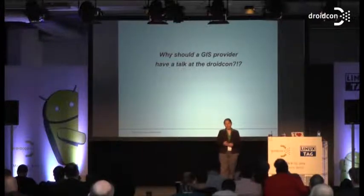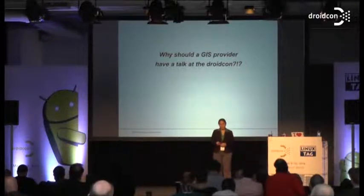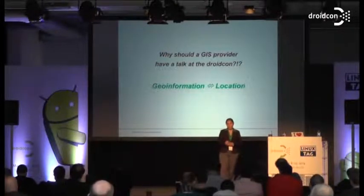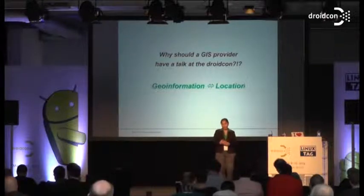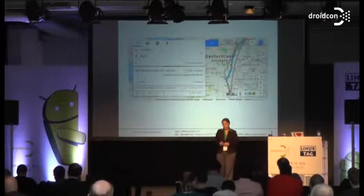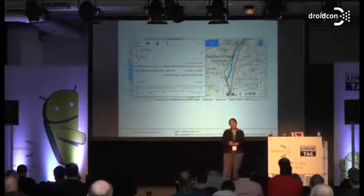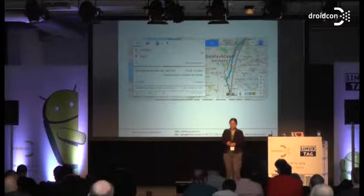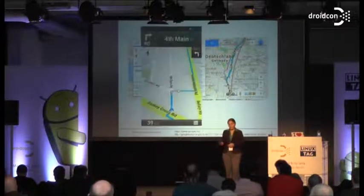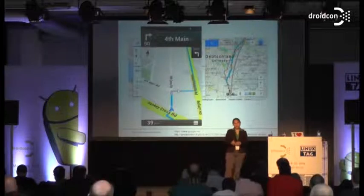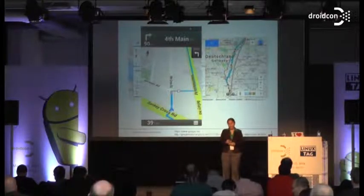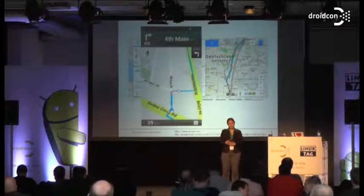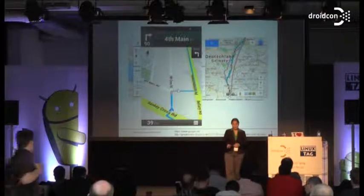But why should a GIS provider give a talk here? GIS information is all about location. We all have mobile devices, and we can use them to access our location. In former days, when we wanted to plan a trip, we used a desktop tool to plan in advance. Nowadays, we can just use our mobile device and ask where we have to go and which road to take, right here while on the trip.